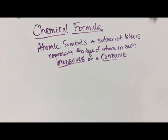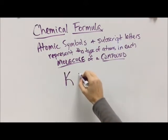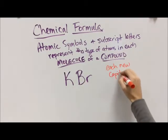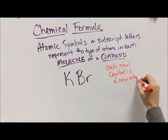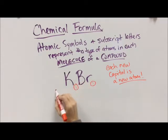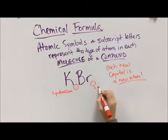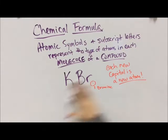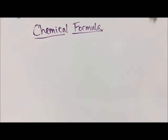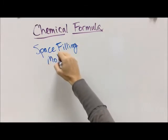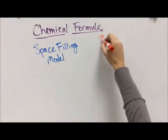We could also have K, Br — each new capital letter is a new atom, because on the periodic table each symbol begins with a capital letter followed by lowercase. So we have one potassium (assumed) and one bromine, giving us KBr, potassium bromide. We're just practicing going from a molecule to a formula and from a formula back to a molecule.